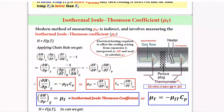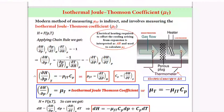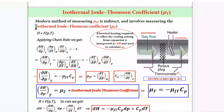I want to introduce one new term before we move into the second law — the isothermal Joule-Thompson coefficient. In the previous Joule-Thompson experiment, enthalpy was kept constant. What we are now introducing is the modern way of finding the Joule-Thompson coefficient, where it is indirectly calculated using a heater. This quantity, which I denote as mu_T, is the isothermal Joule-Thompson coefficient.